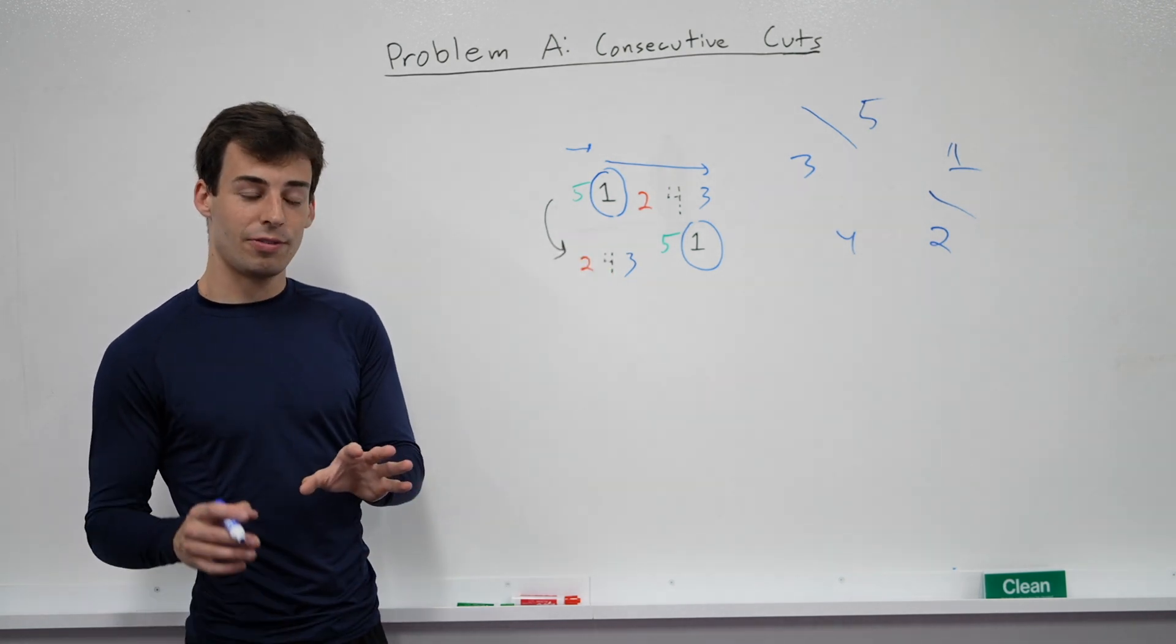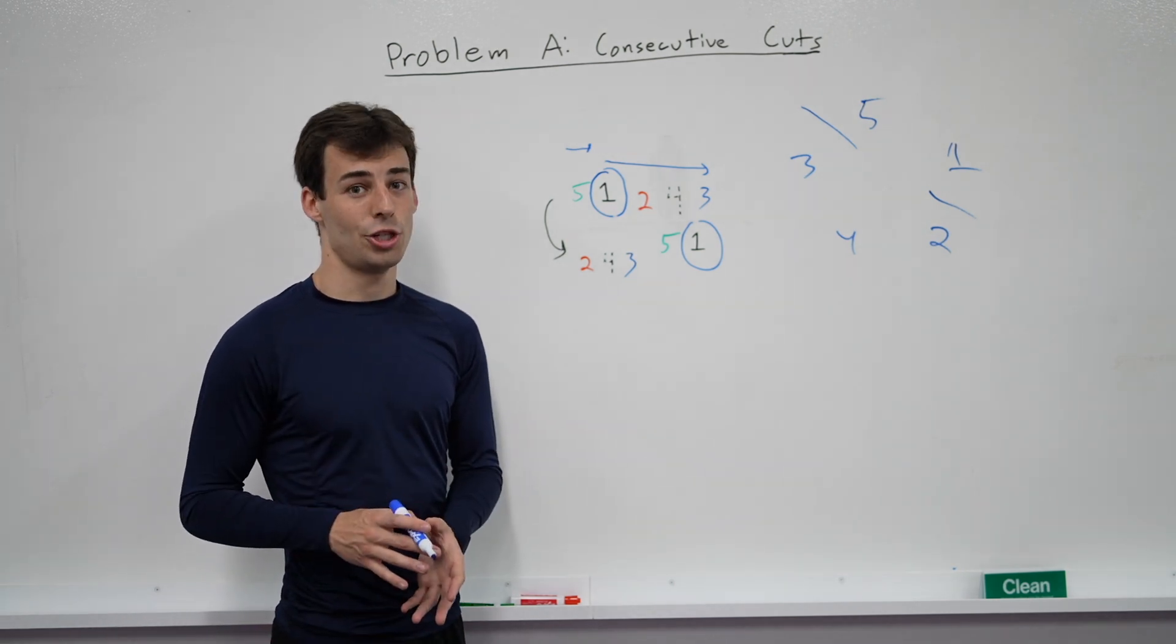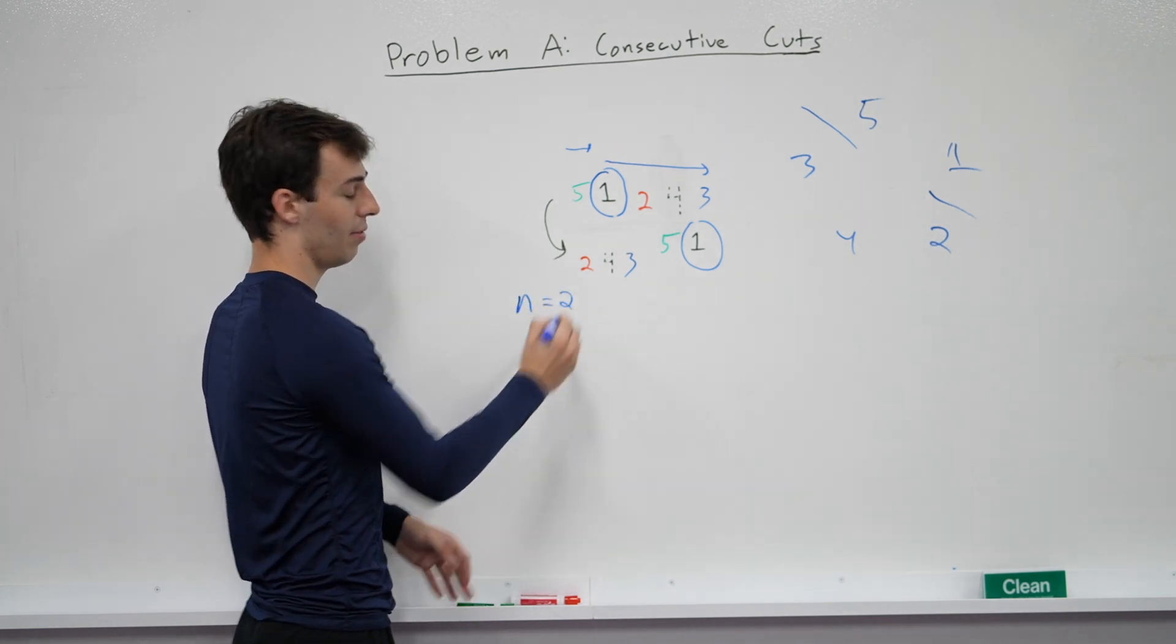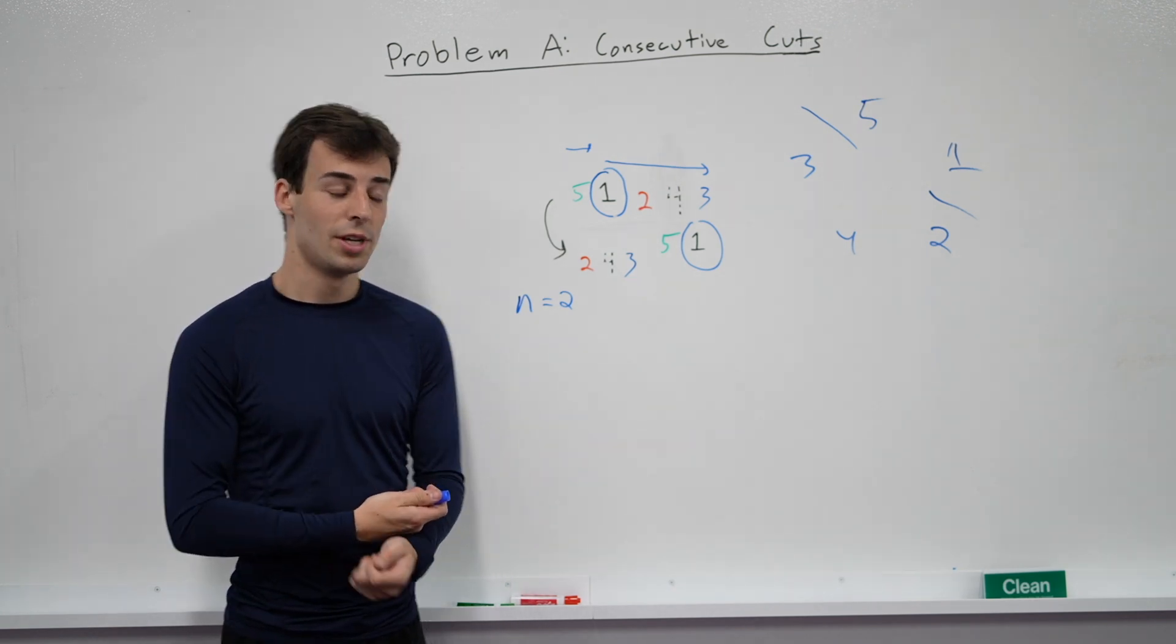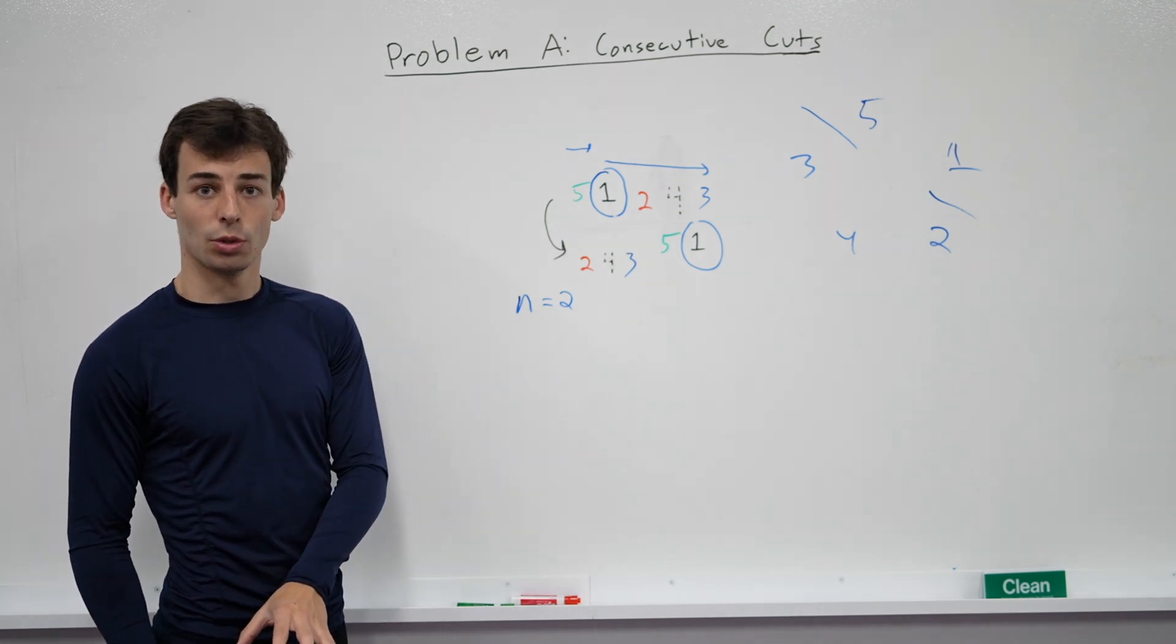There are some cases you have to be careful with here. In particular, if the size of the deck is small, then you might run into issues. So if n equals 2, if there are only two cards in the deck, then every time you cut, the deck will be uniquely determined. So you have to special case if n equals 2, because then the number of cuts determines what the deck will look like.